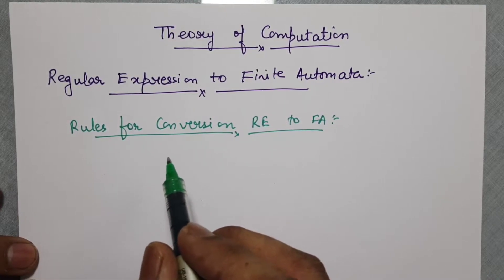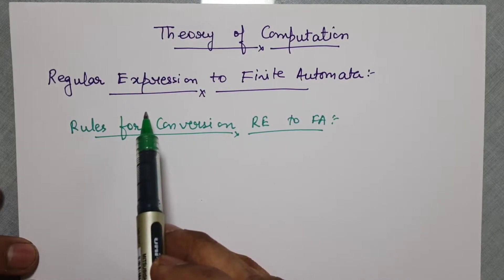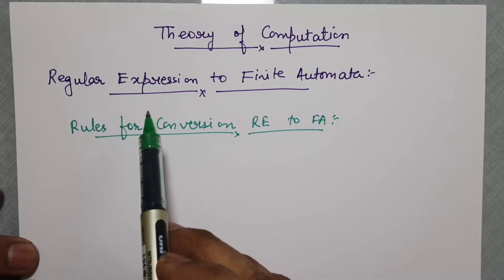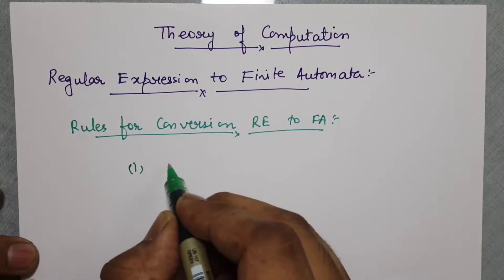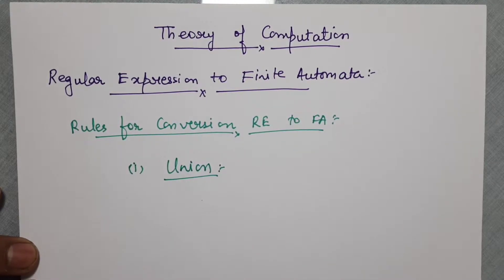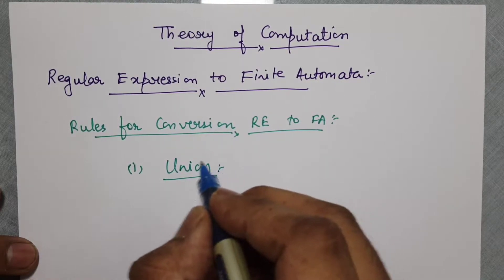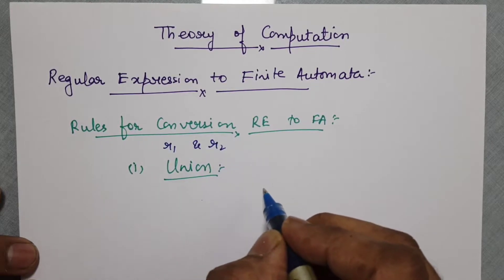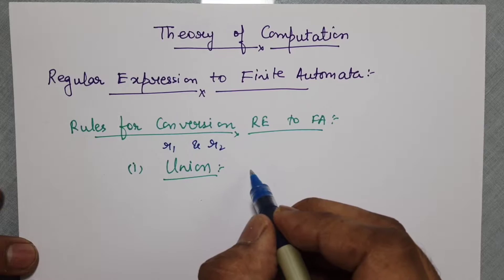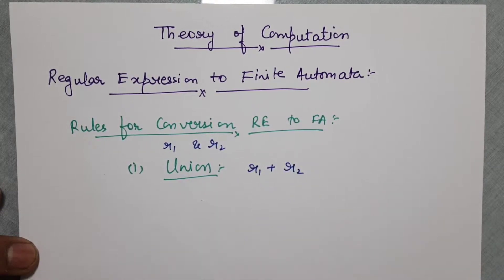As we know, there are three types of regular expression operations. The first is union. If there is a regular expression R1 and another regular expression R2, then the union of the two regular expressions is represented by R1 plus R2.